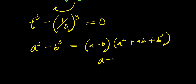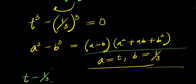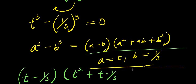And in this case my a is t and my b is 1 over 3. So I use this in order to expand — I apply it here. So I am going to have t minus 1 over 3 as a minus b, times t squared plus t times 1 over 3 plus 1 over 3 to the power of 2. This equals 0.